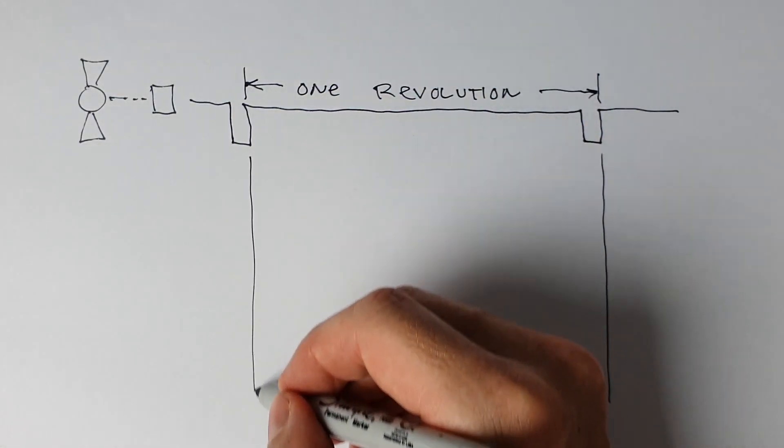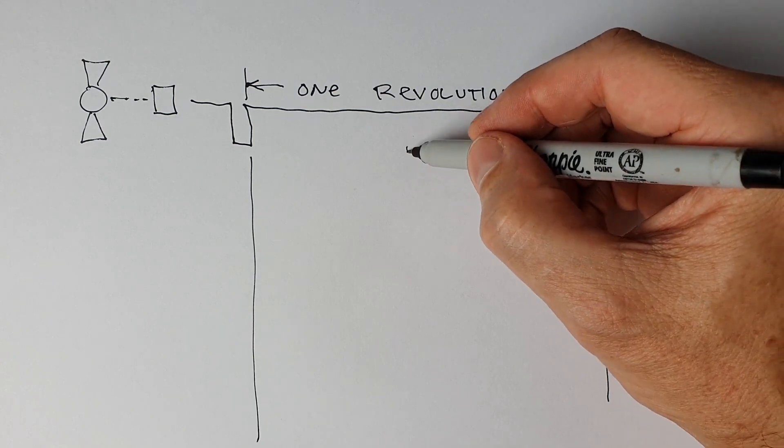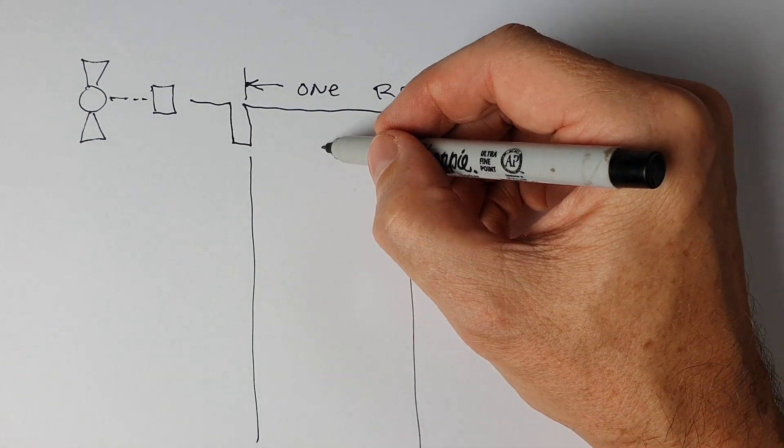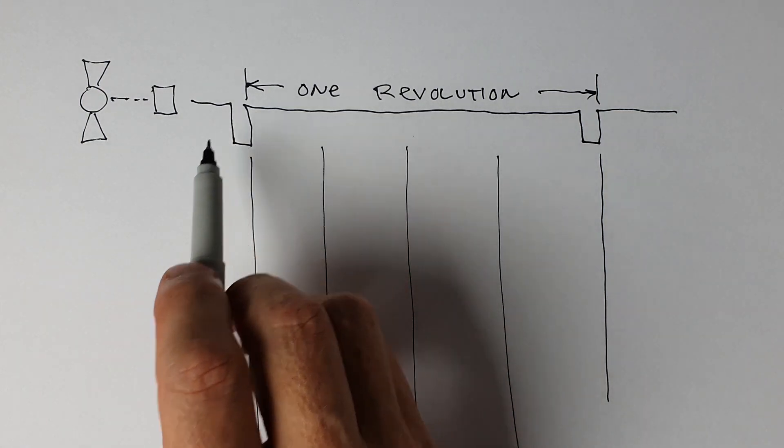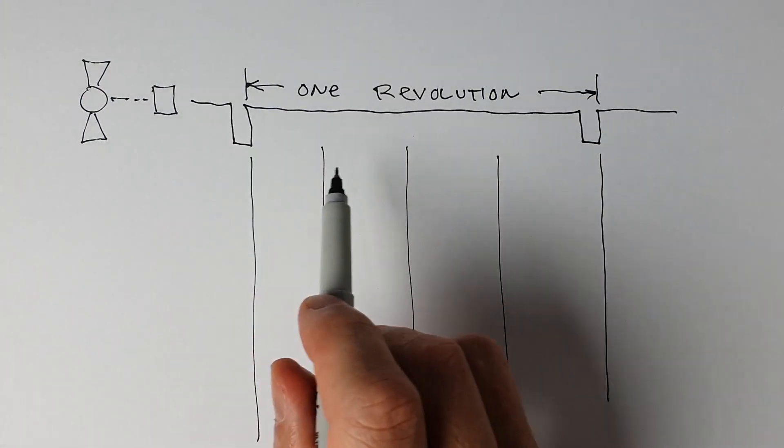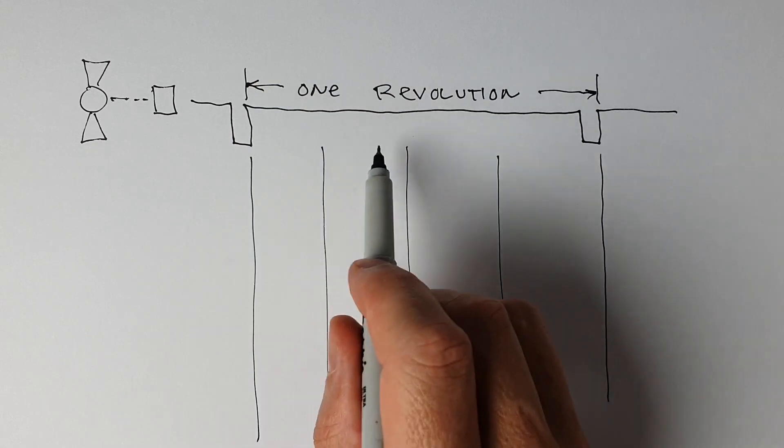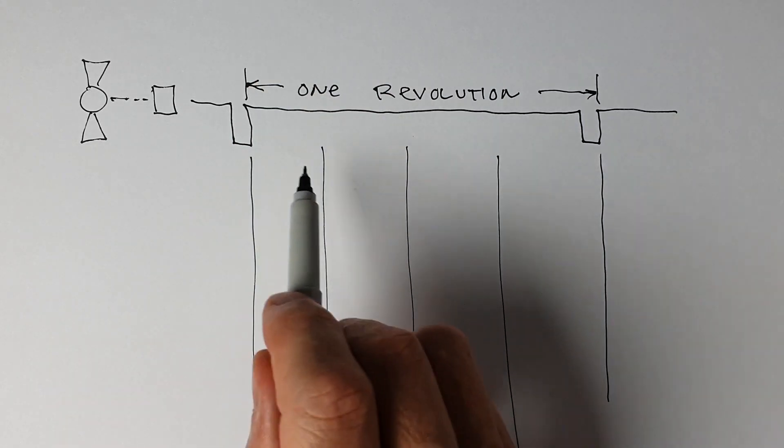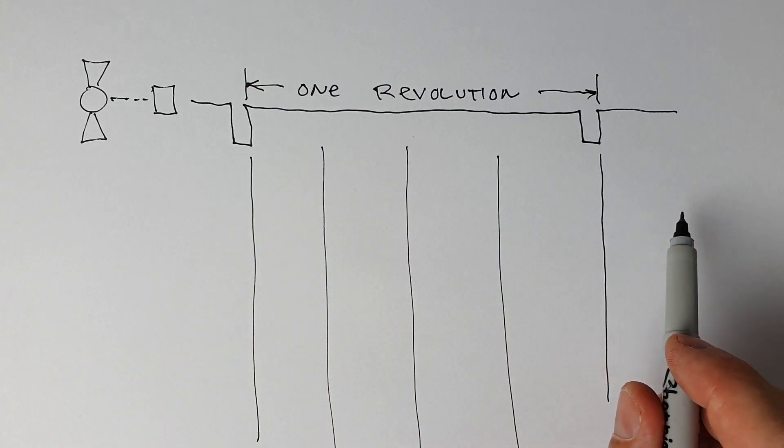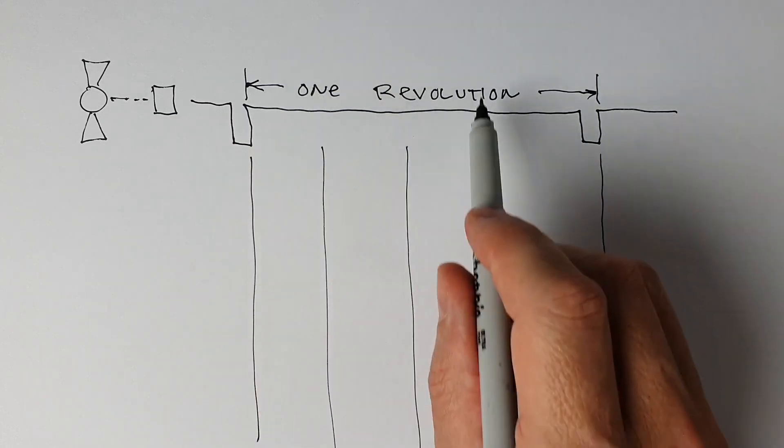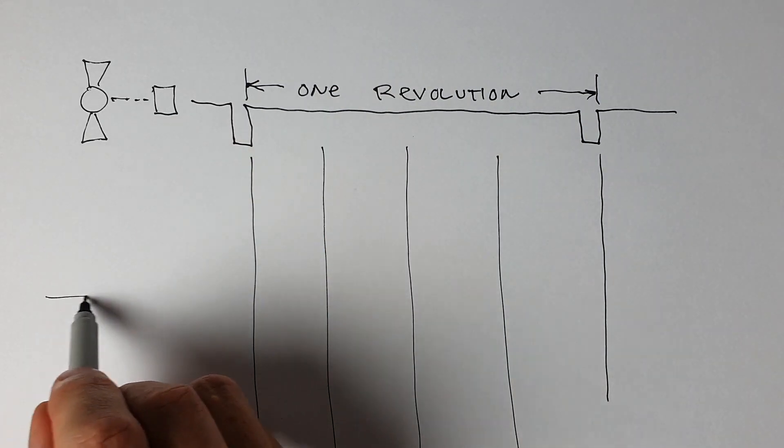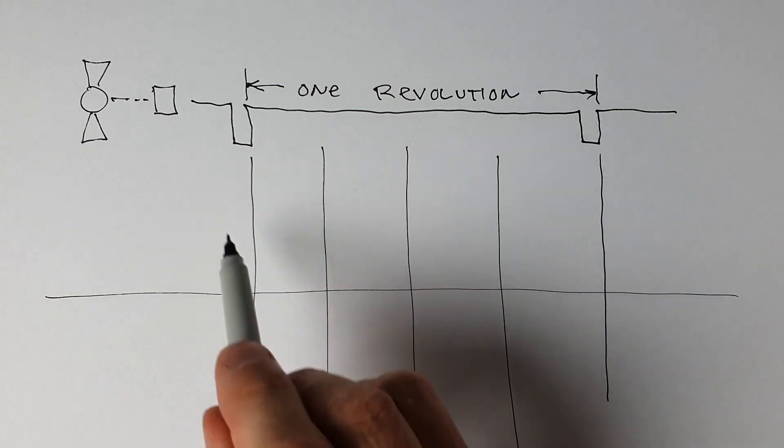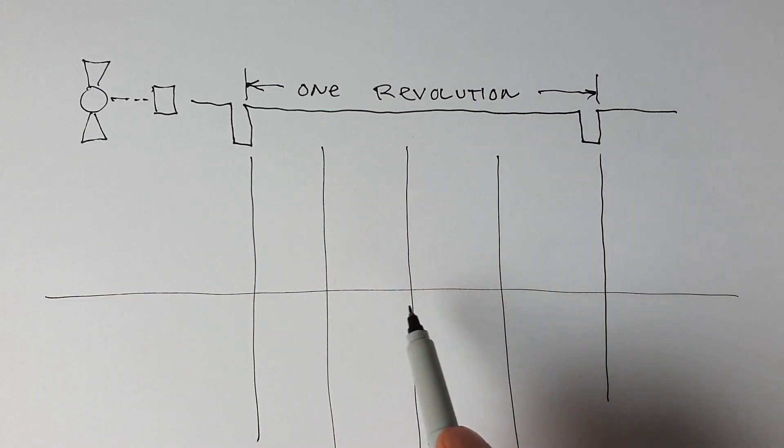So we divide it like this. So we take this one revolution and we effectively multiply the frequency to create a reference signal that's four times higher frequency than the one revolution signal. This timing is used to decode the waveform.